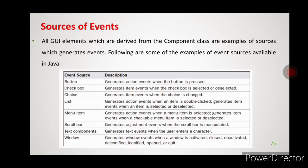Next is checkbox — it will generate an item event. In checkboxes, we list a list of items, and whichever items we need we select them by putting a check mark. These items can be selected or deselected, and at that time an item event will occur.